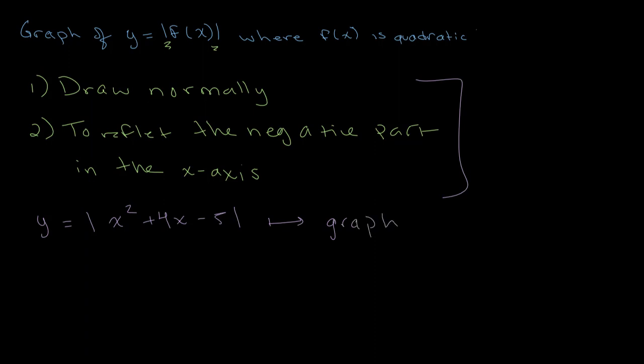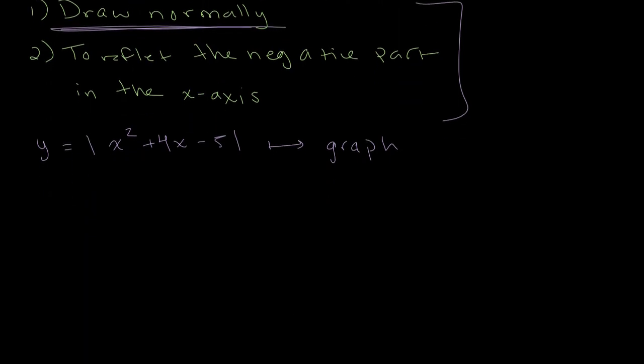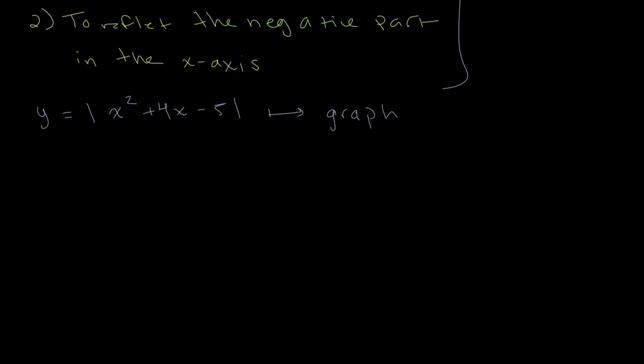So once again, as I mentioned earlier, what we want to do first is we want to draw our graph normally. We ignore the absolute value for now. So we write y equals x squared plus 4x minus 5. And we want to graph this. So you should already know how to graph quadratic equations.